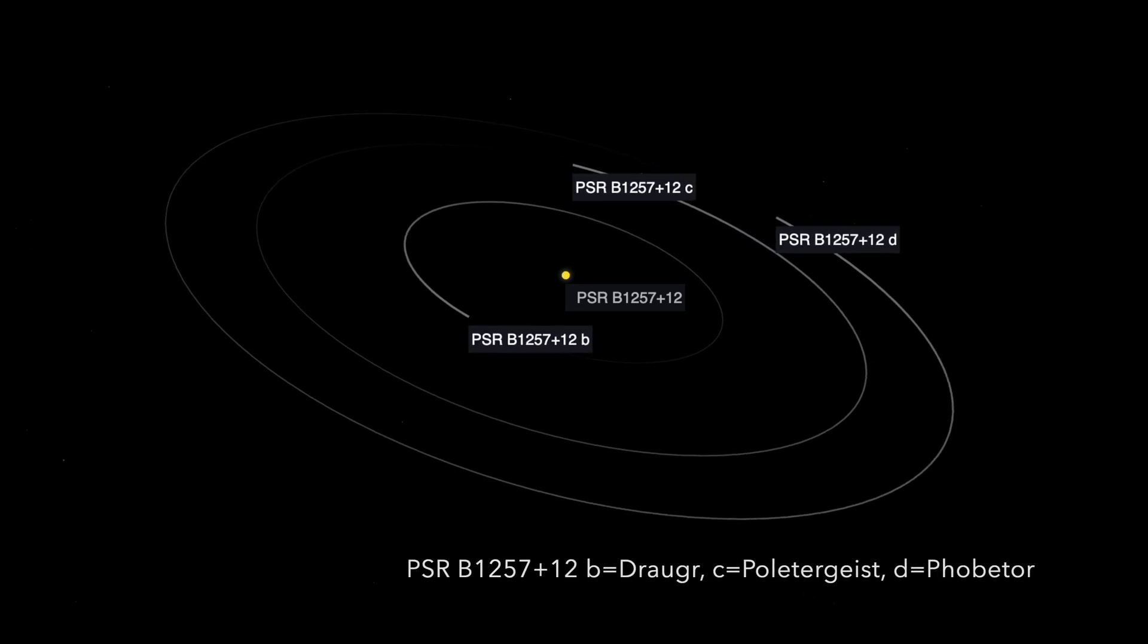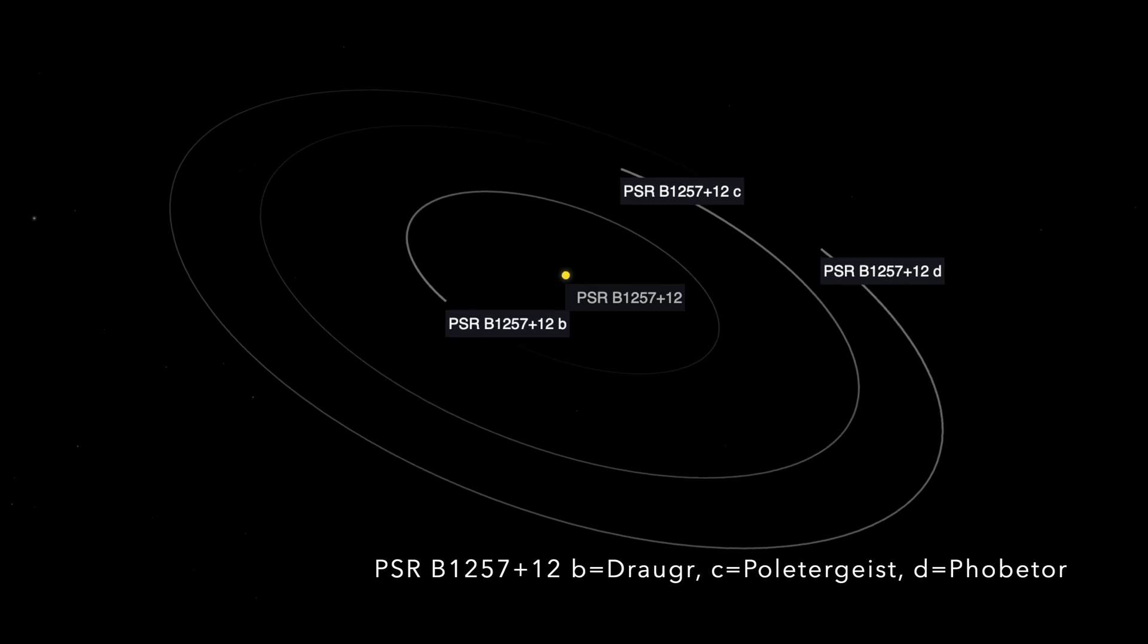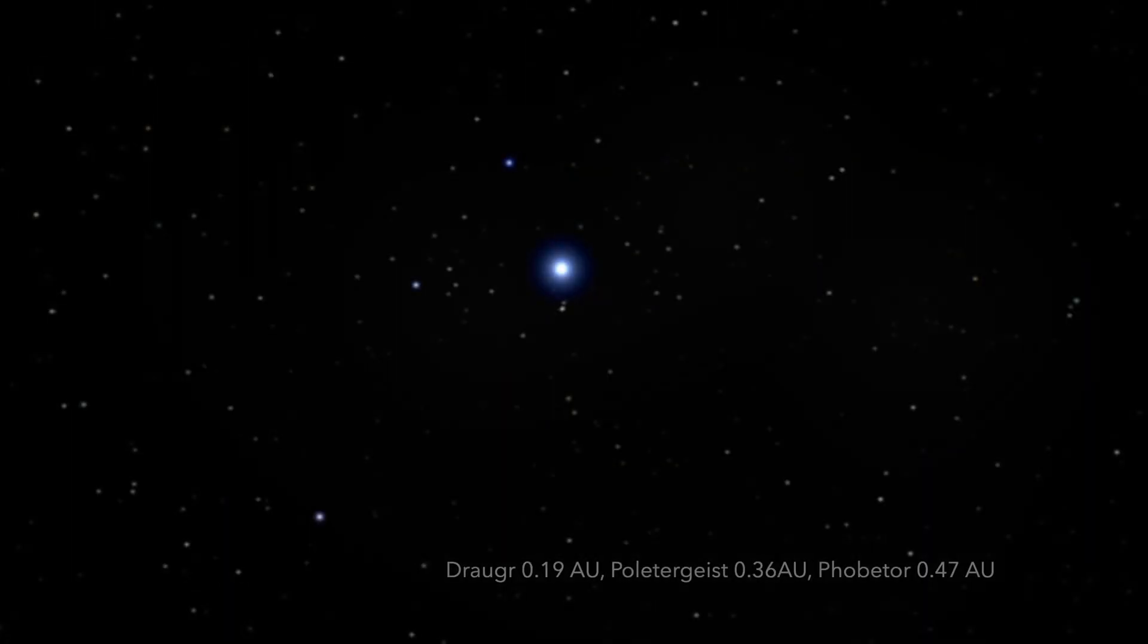However, these newfound planets presented scientists with a paradox. Positioned at distances of 0.19, 0.36 and 0.47 astronomical units from the pulsar, Dregor, Poltergeist and Phobitor had orbits that appeared too close to it. According to conventional wisdom, their existence at such orbital distances was deemed implausible.